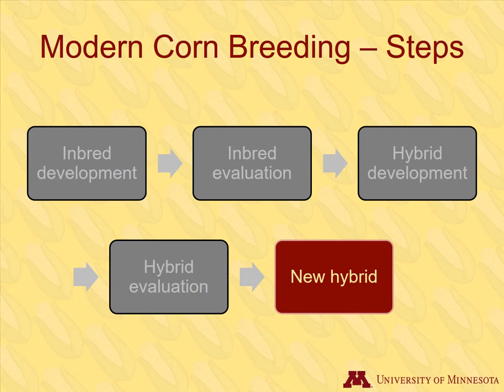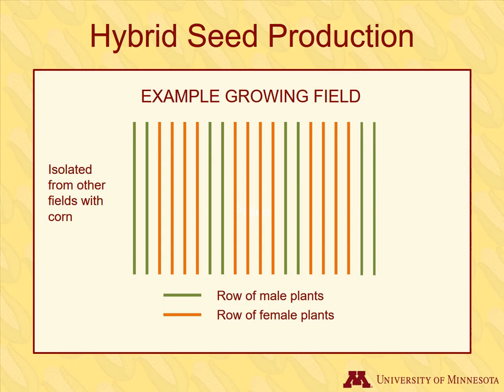The best hybrids will be put on the commercial market to be sold to farmers, but first they must go into seed production. When breeders have enough seed of the parent inbreds, they start the process of producing hybrid seed on a large scale to sell to farmers. Fields used to produce the commercial hybrid seed are physically isolated from other corn plants to prevent cross-pollination from neighboring fields. Both inbred parent lines are planted in the hybrid seed corn fields at the proper time in order to synchronize pollen shed and ear silking of the two different inbred lines.